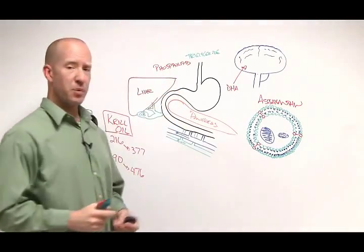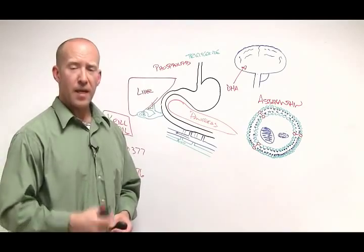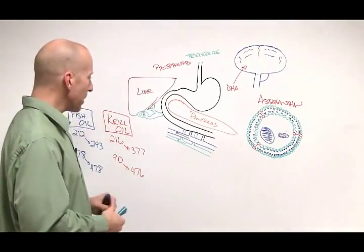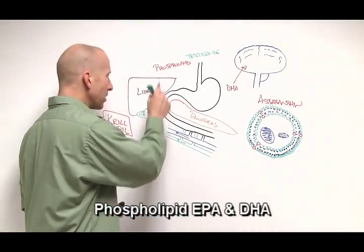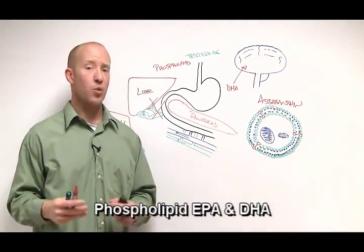Compare that to the phospholipid form. The phospholipid form of omega-3 fatty acids are found in krill oil. The real benefit to this is the phospholipid form of a fatty acid totally bypasses the need for emulsification or bile.